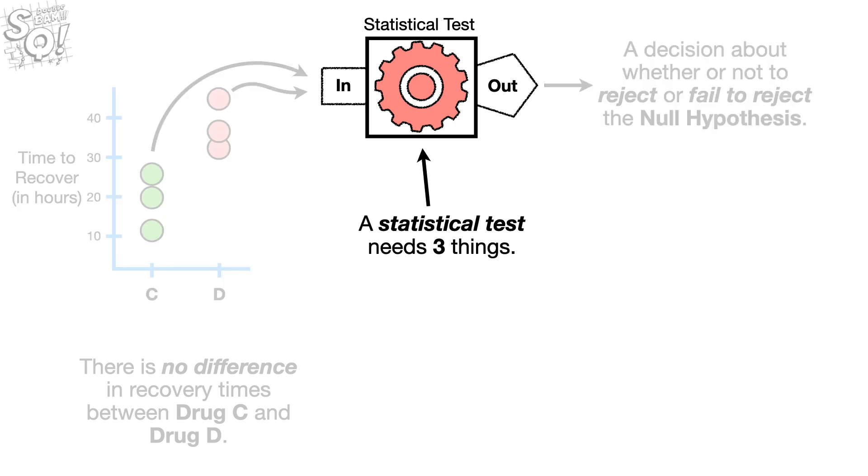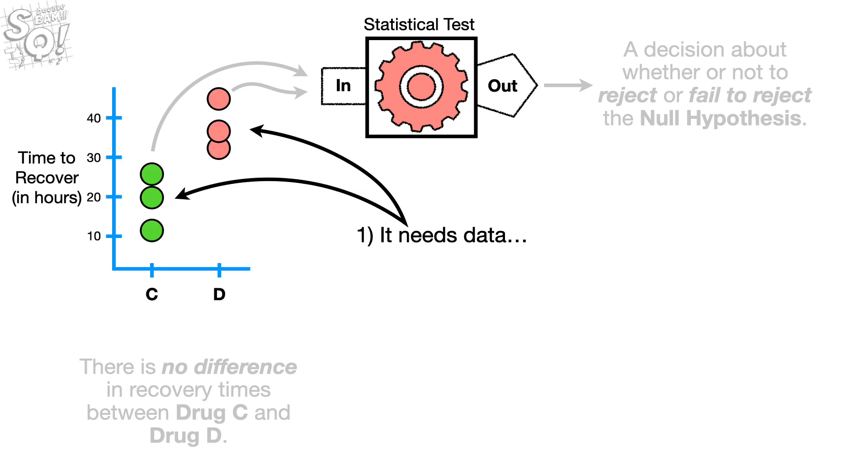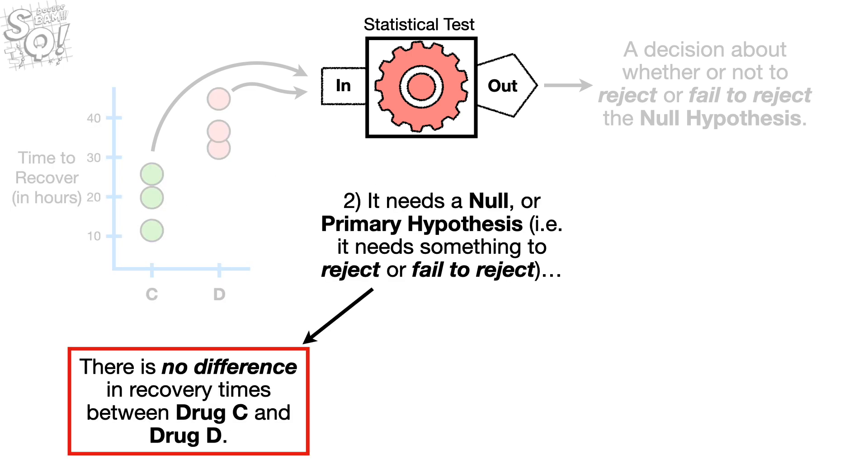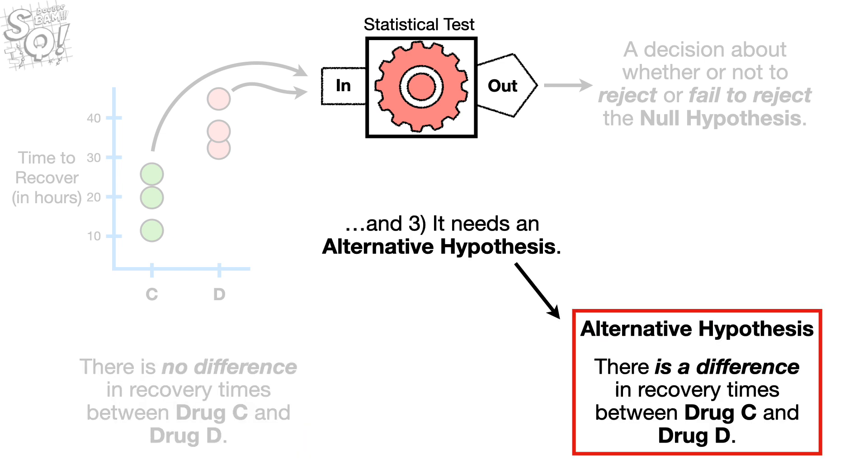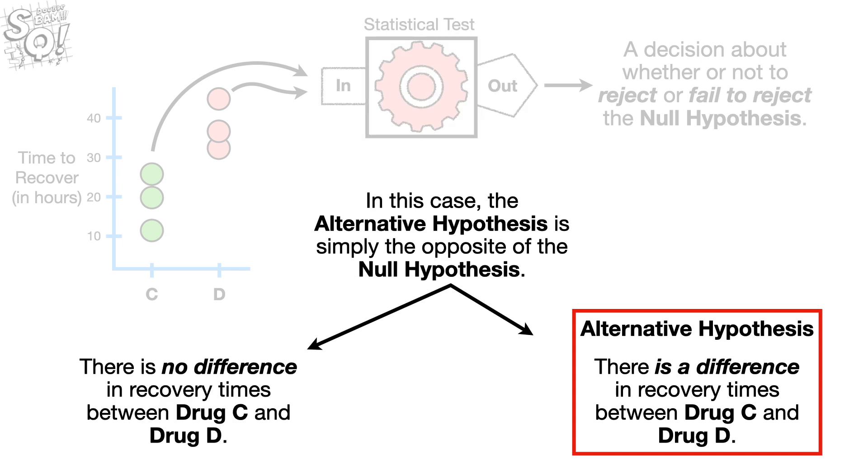A statistical test needs three things. One, it needs data. Two, it needs a Null or Primary Hypothesis, that is, it needs something to reject or fail to reject. And three, it needs an Alternative Hypothesis. In this case, the Alternative Hypothesis is simply the opposite of the Null Hypothesis.